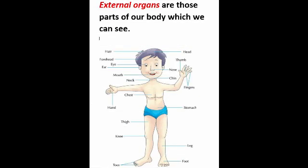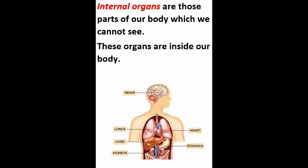External parts are those located outside, like eyes, ears, nose, mouth, hands, legs, and shoulders, and many more. Then there are some parts of the body which cannot be seen because they are located inside the body, and hence they are called internal organs — for example, brain, heart, lungs, stomach, kidneys, and many more.